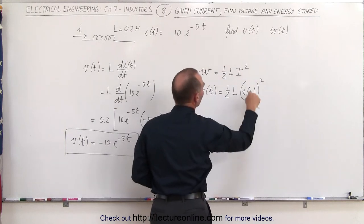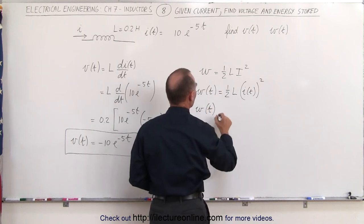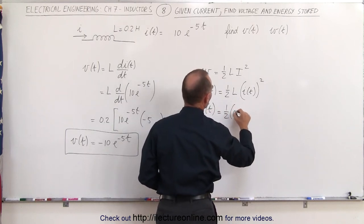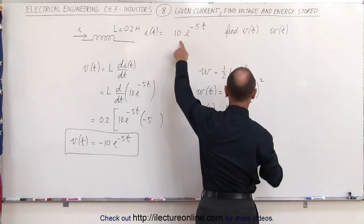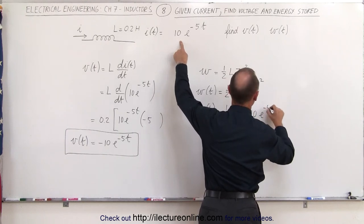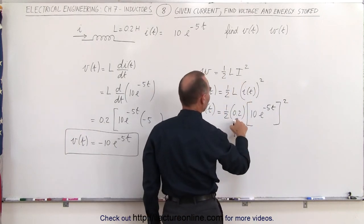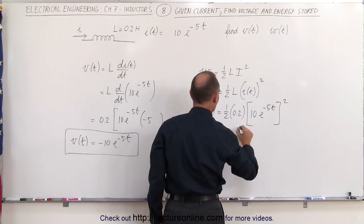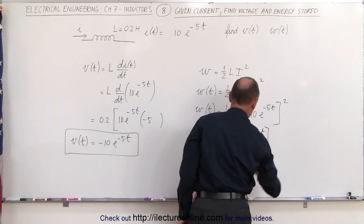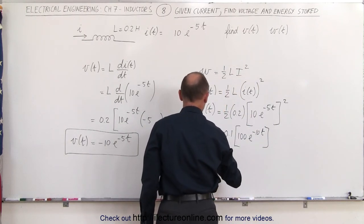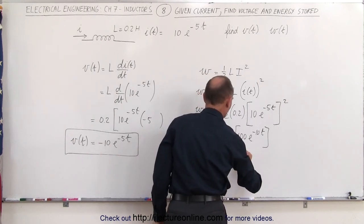We take the current and plug it in and multiply by the inductance. So the work done to store that energy is equal to one-half times the inductance, which is 0.2, times the current squared. The current is 10e to the minus 5t, quantity squared. Simplifying, we get one-half times 0.1 — that gives us 0.1 — times 100e to the minus 10t, which simplifies to 10e to the minus 10t. That is the energy stored as a function of time.